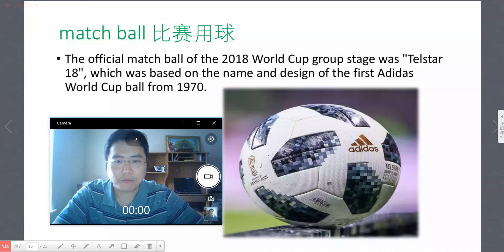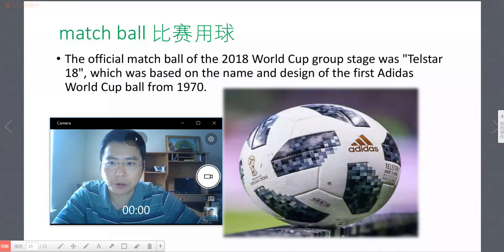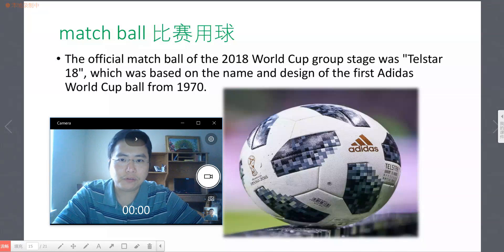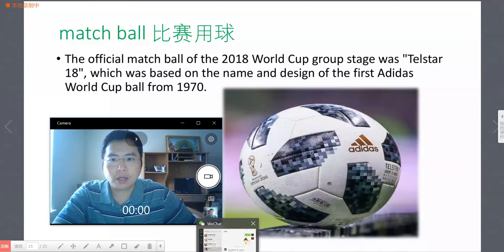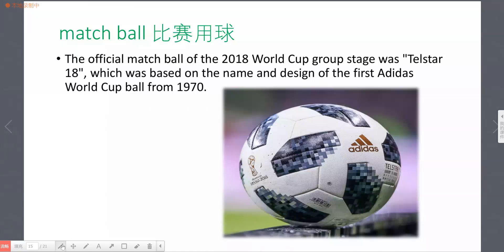The official match ball of the 2018 World Cup group stage was Telstar 18, which was based on the name and design of the first Adidas World Cup ball from 1970. There's a phrase here: 'group stage' (小组赛阶段). The ball's name is Telstar 18, designed by Adidas.